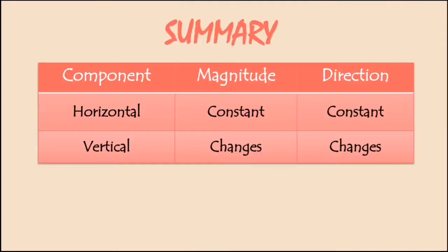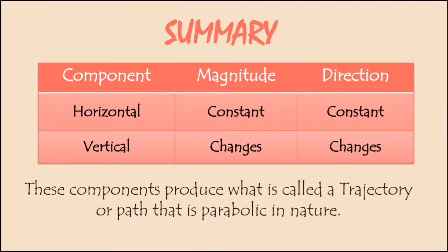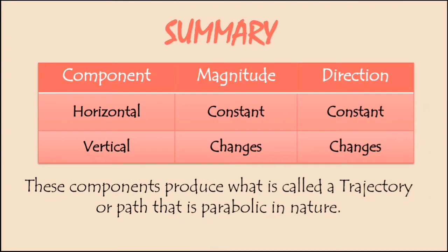Summary: These components produce what is called a trajectory or path that is parabolic in nature. Horizontal component's magnitude and direction remain constant, while in vertical, both magnitude and direction change.